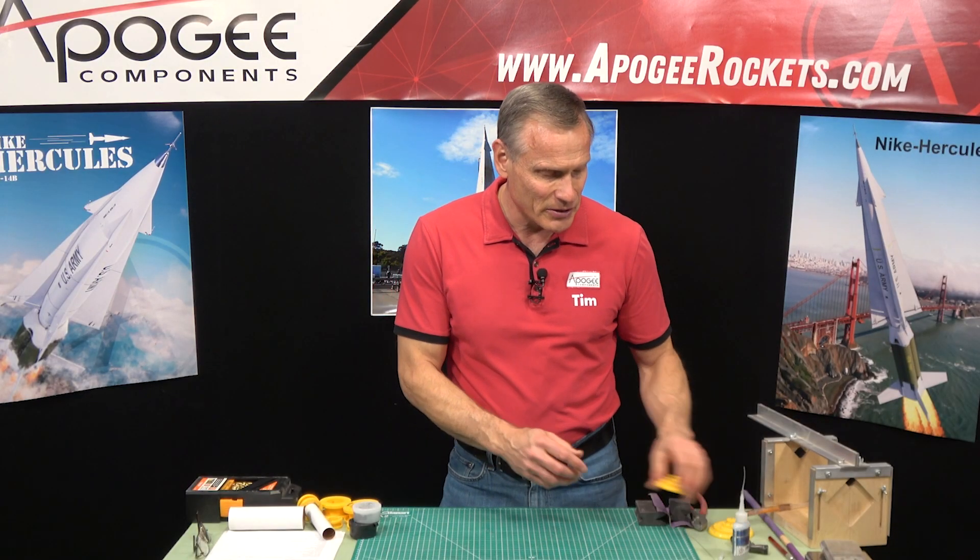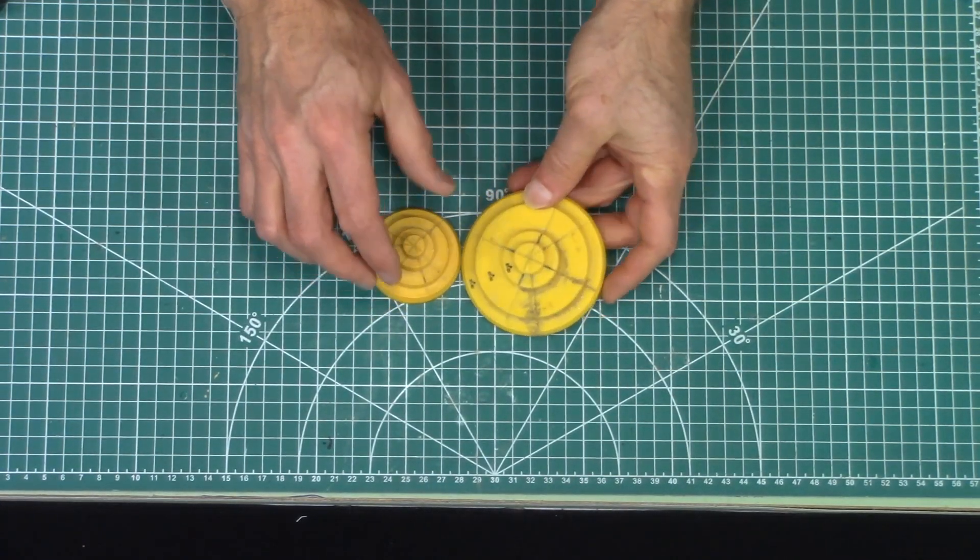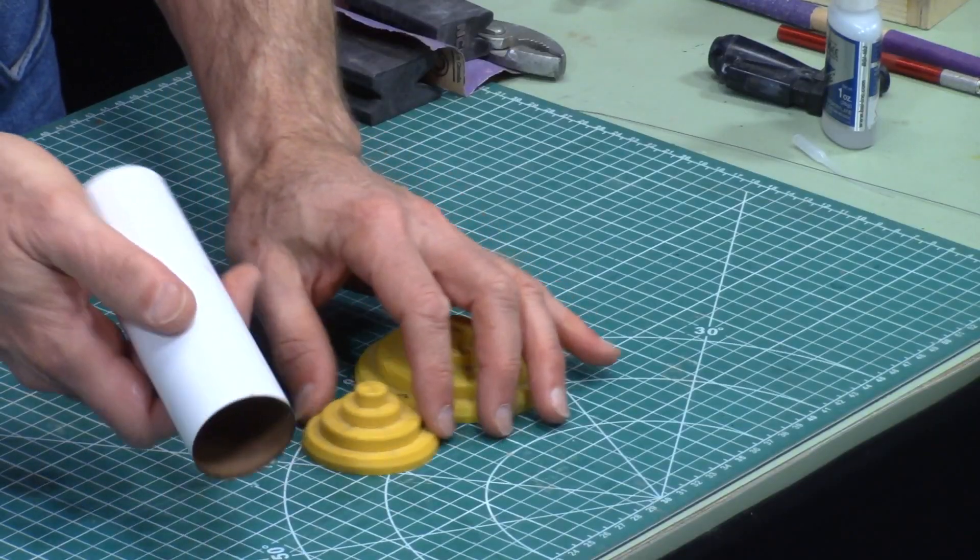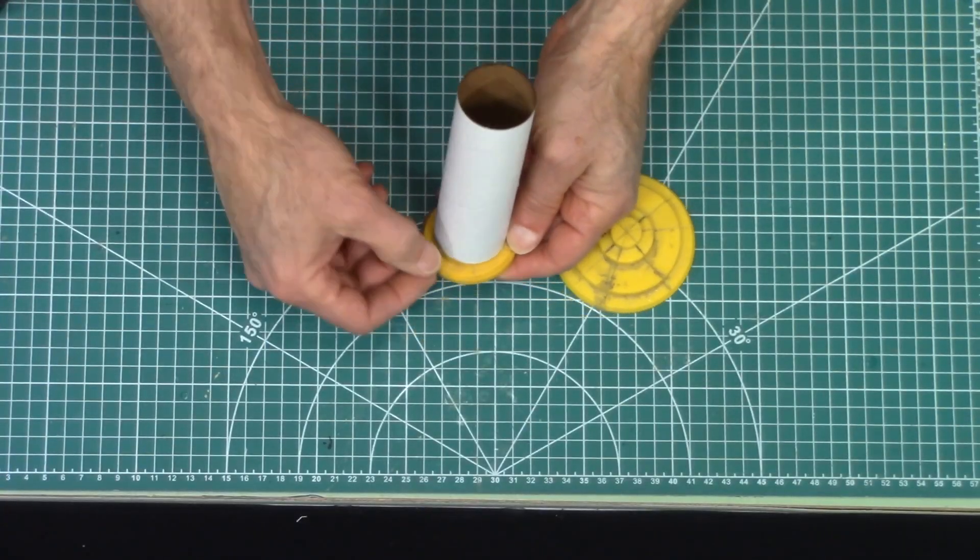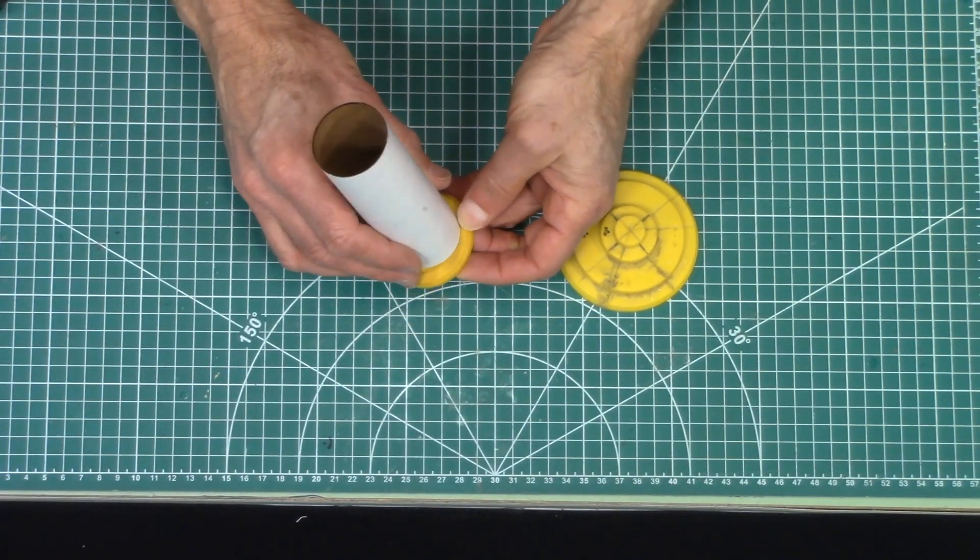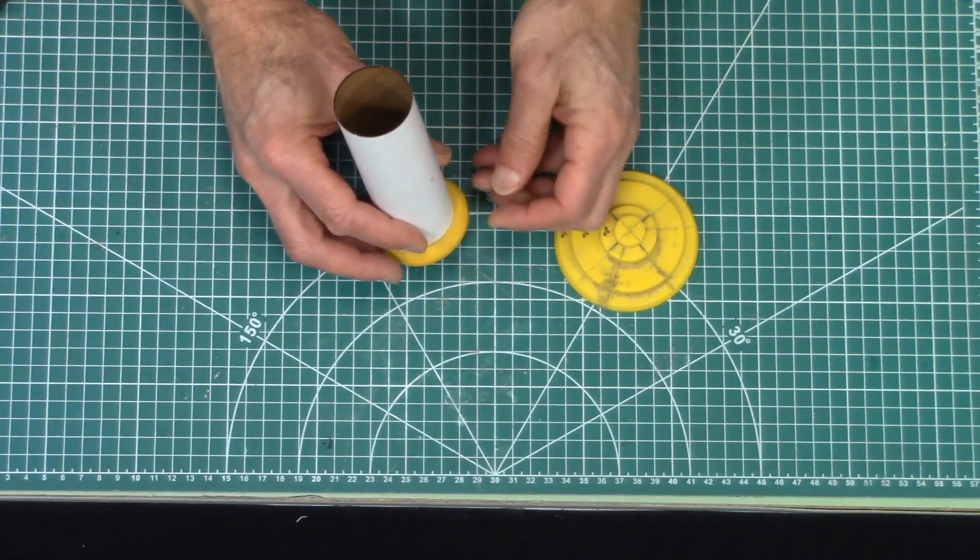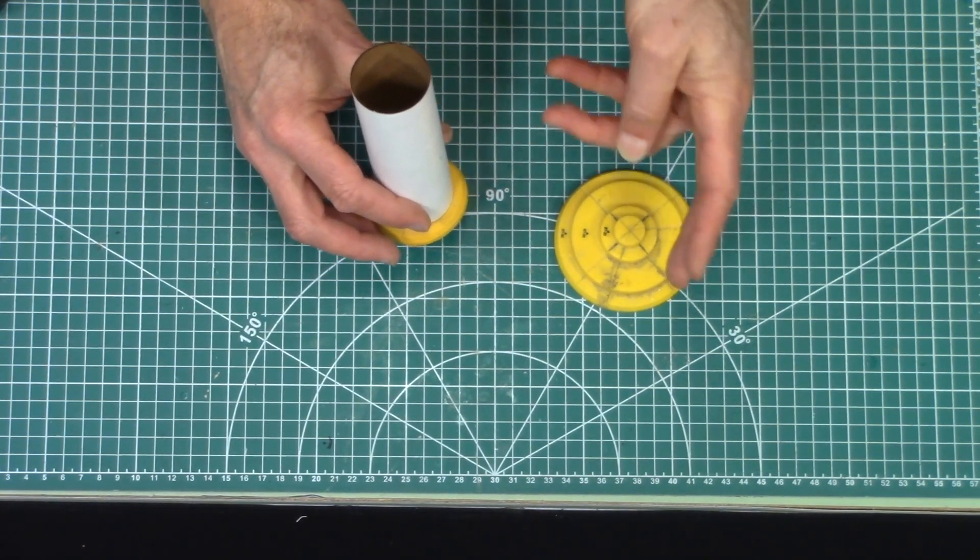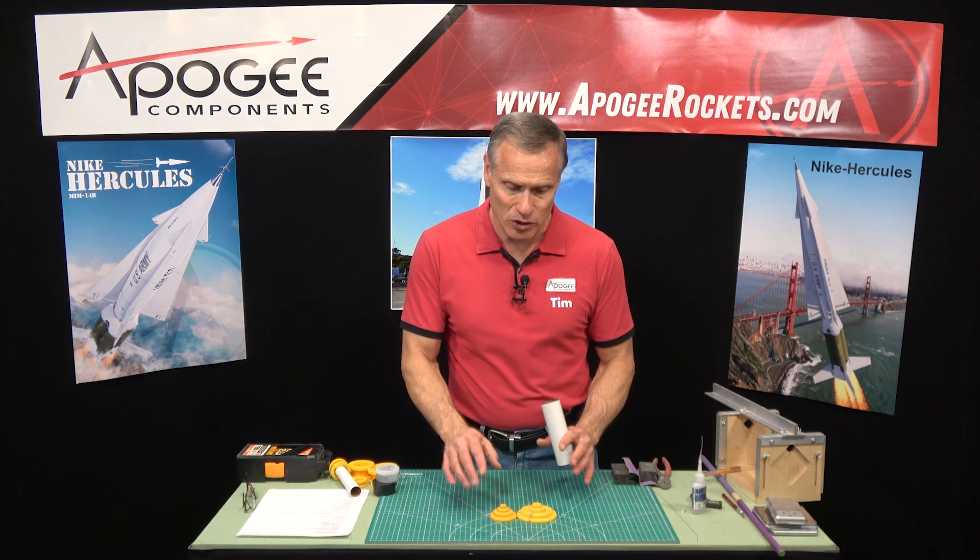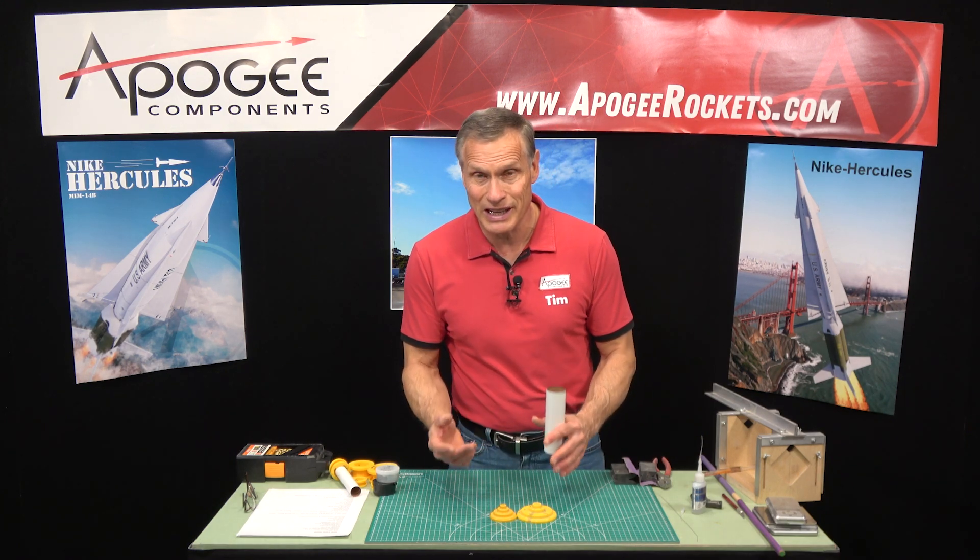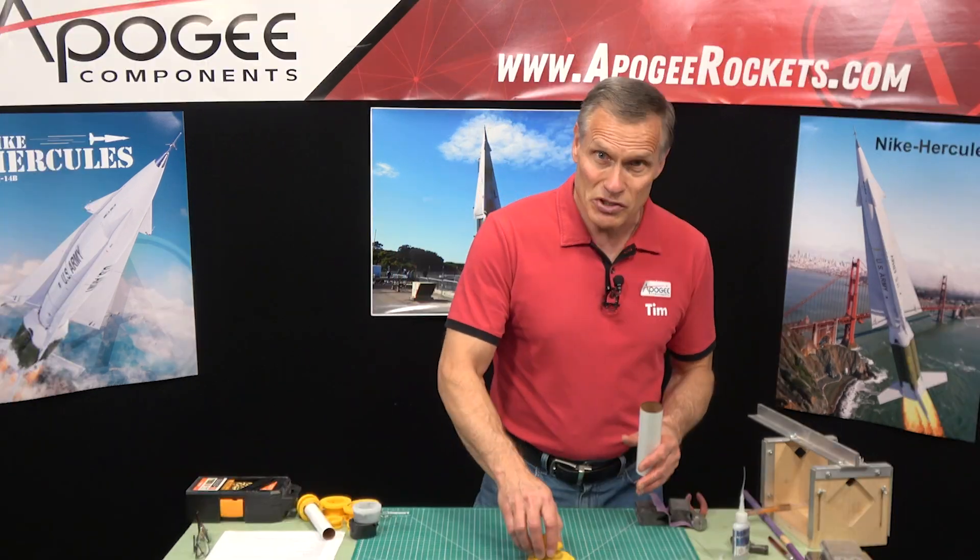Kind of going with that are these. And these are tube marking guides. So they're very similar. So what you do is you put the tube on there and you'll notice that there's little marks on it where you can mark for fin locations. So there's a three fin or a four fin that you can mark. And again these are the common sizes for small tubes up to a BT-80 which is your 2.6 inch tube.